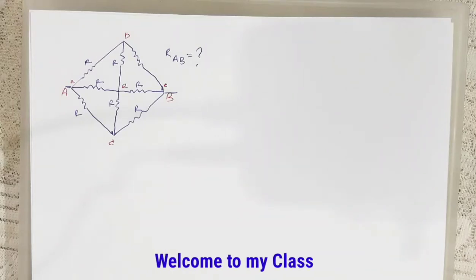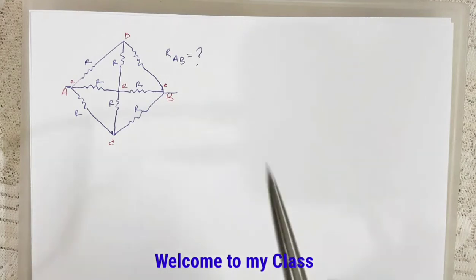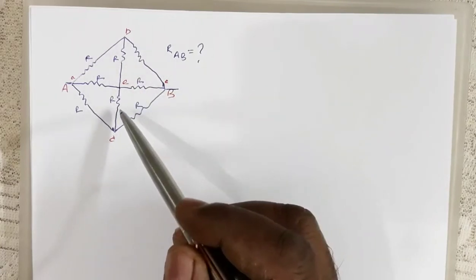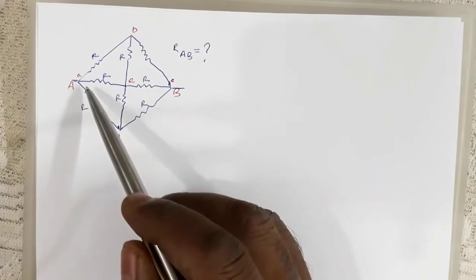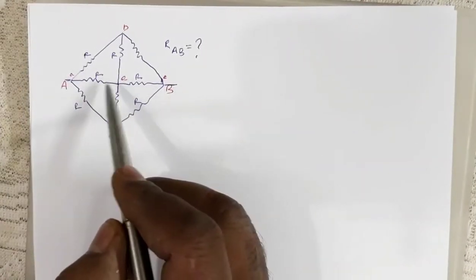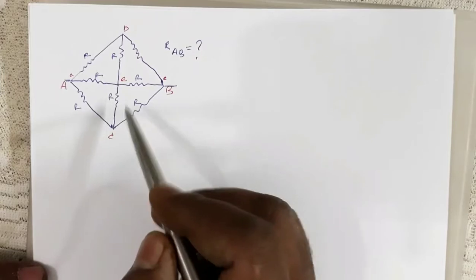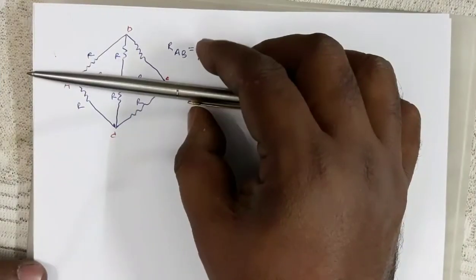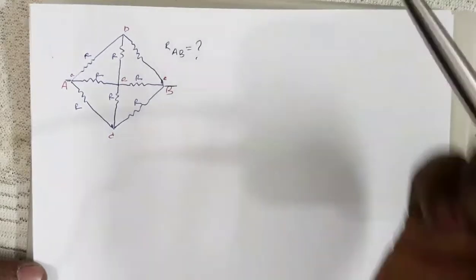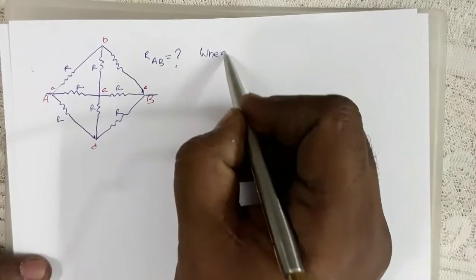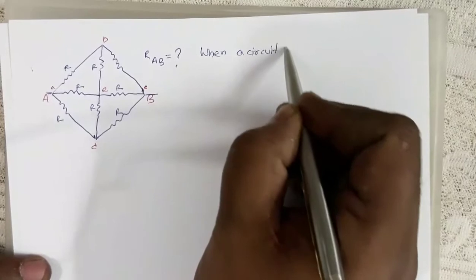In this video I am going to show you how to find the equivalent resistance of circuits — one particular type of circuits which have some sort of symmetry. As you can see in this circuit AB, you have to find the equivalent resistance between A and B, and there is symmetry along this line. Above this line or below this line there is a symmetry.